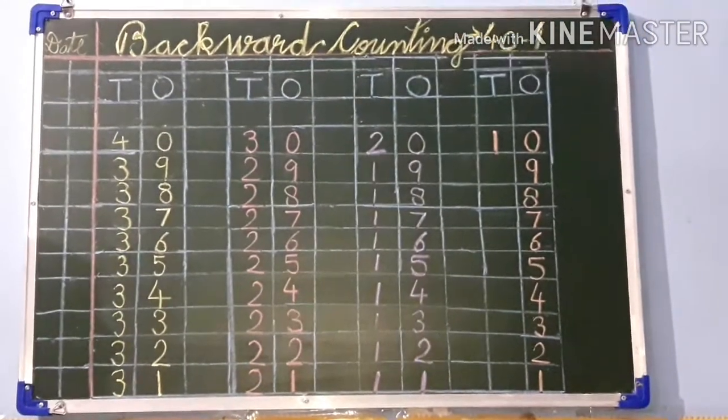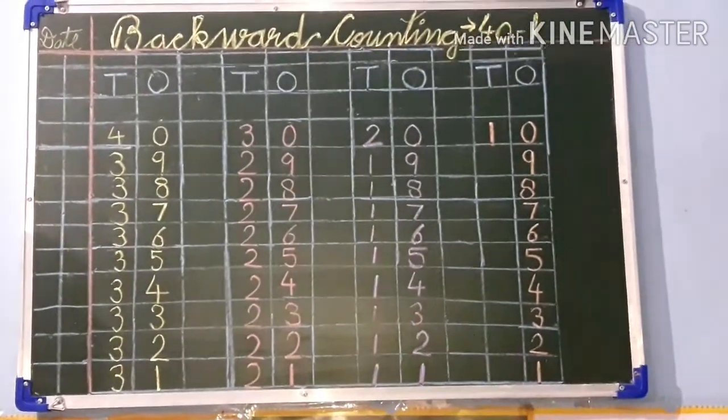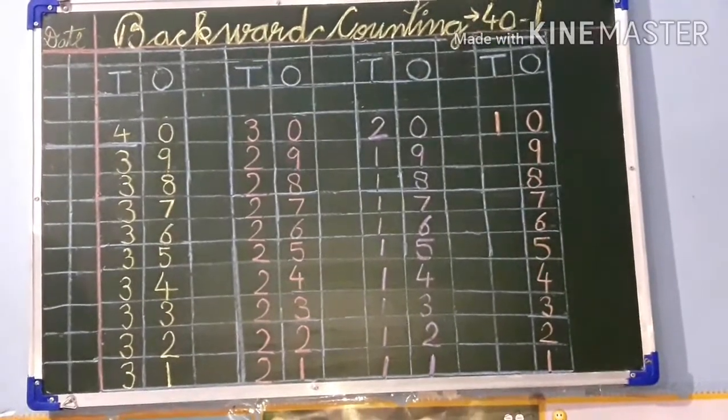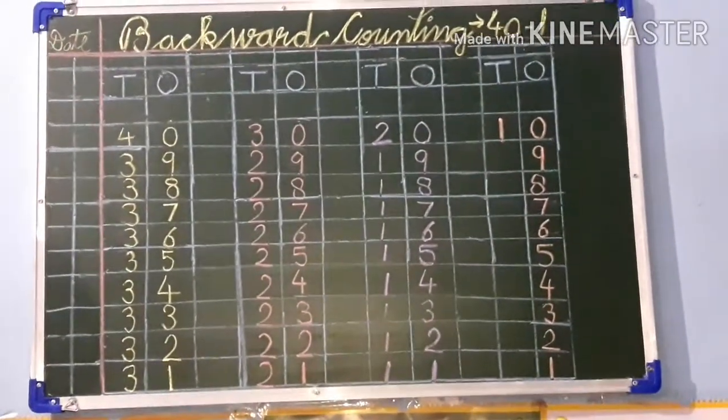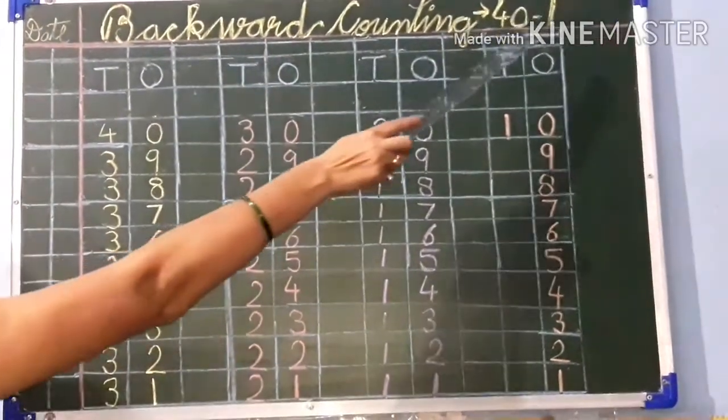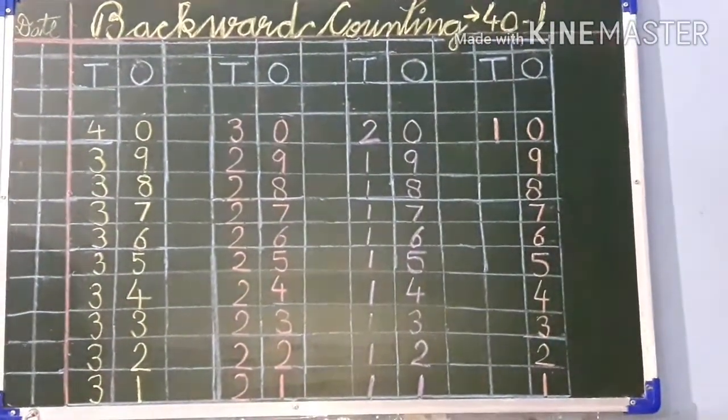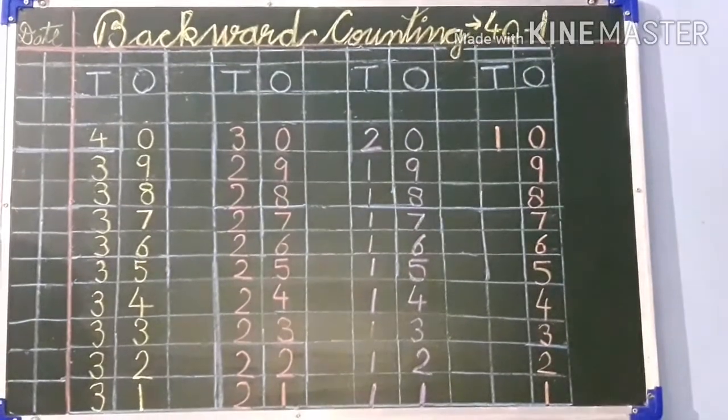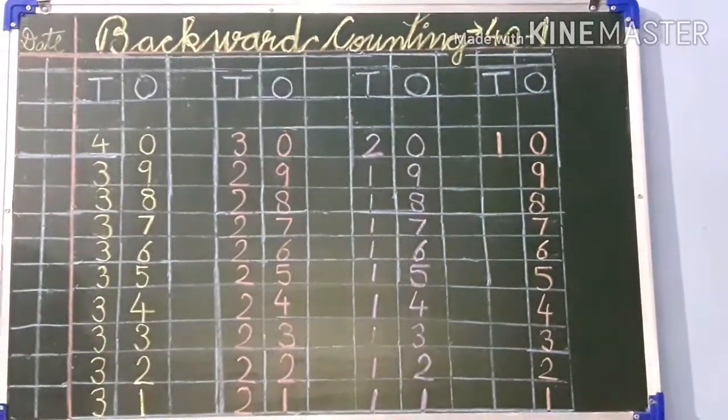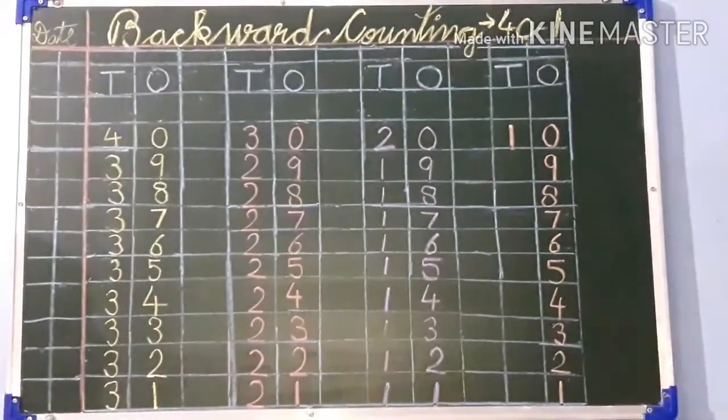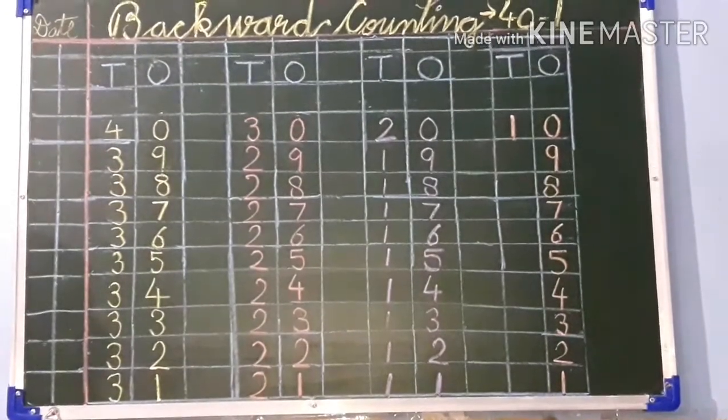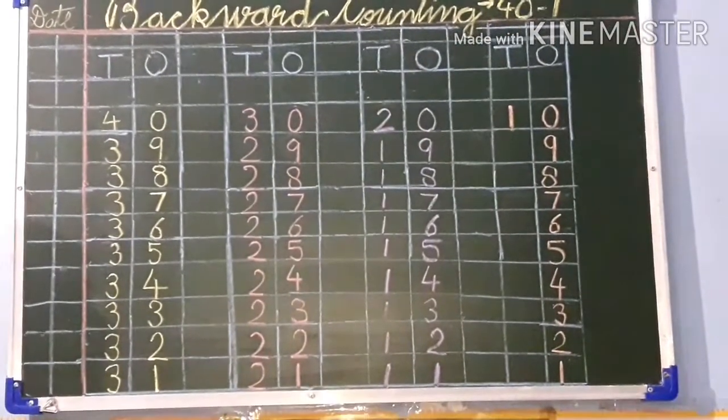Earlier you have studied backward counting 30 to 0 in first term, and in second term we are going to start backward counting from 40 to 1. So take out your notebook, your pencil, eraser, ruler, and blue marker pencil. I hope you all have taken out all these things.